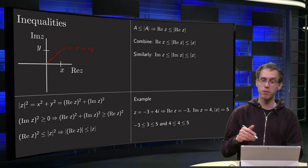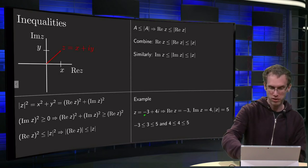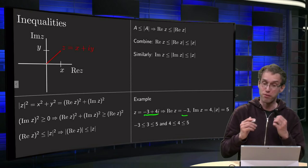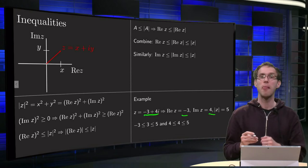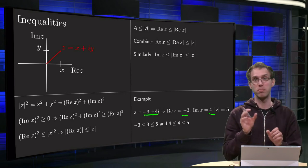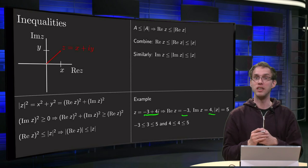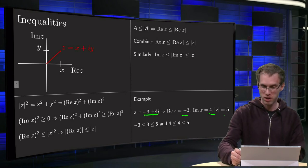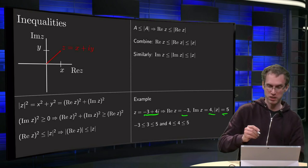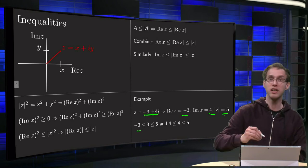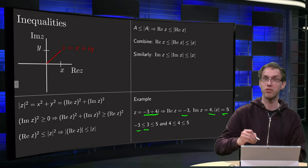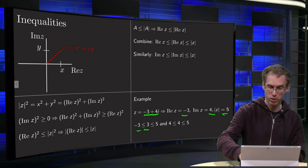Let's do a small example. z equals minus 3 plus 4i. The real part of z equals minus 3, the imaginary part is the part before the i, so 4. The norm of z is the square root of minus 3 squared plus 4 squared, which is 9 plus 16 equals 25, and then the square root equals 5. Applying the inequality, we see the real part of z, minus 3, is smaller or equal to the absolute value of the real part of z, which equals 3, and that is smaller or equal to the norm of z, which equals 5.